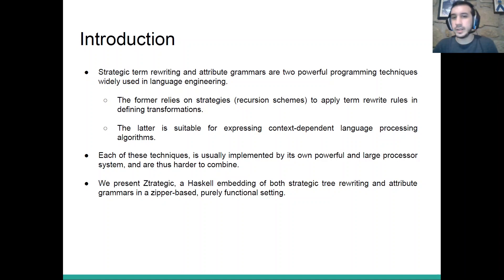As an introduction, there are two very powerful systems for language processing that are typically not used together. The first is strategic term rewriting, in which we use strategies or recursion schemes to traverse a data structure and apply transformations for the different nodes.